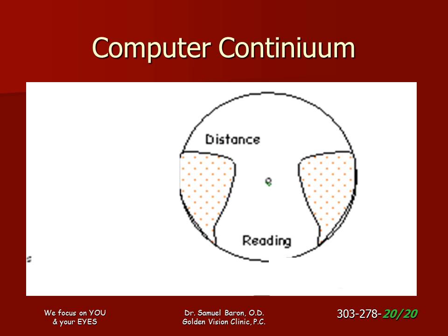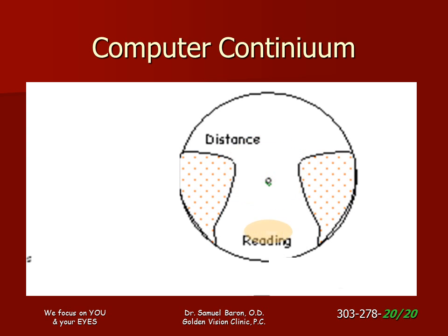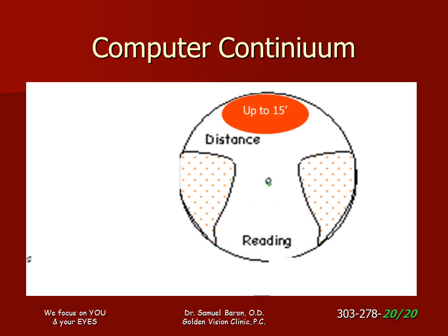Computer continuum invisible progressive multifocal lenses are designed specifically for office computing. When you look straight ahead, you are looking through the part of the lens that is for the computer distance, so you do not have to turn your head and neck backwards to view them. Looking down enables you to read fine detail at 16 inches. If you need to look at people or information up to 15 feet away, look through the very top of the lens. This is not designed for driving or long distance viewing — these are work glasses.